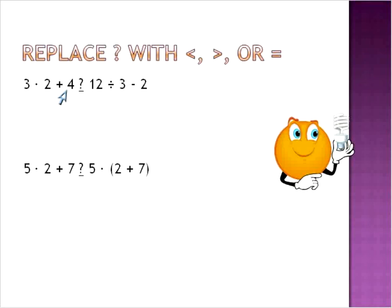You have 3 times 2 plus 4. The order of operations says first we do multiplication, so 3 times 2 is 6 plus 4. 6 plus 4 is 10. And now we'll do what's over here on the right side: 12 divided by 3 minus 2. Again, order of operations will say that we do the division first. 12 divided by 3 is 4 minus 2. 4 minus 2 is 2.